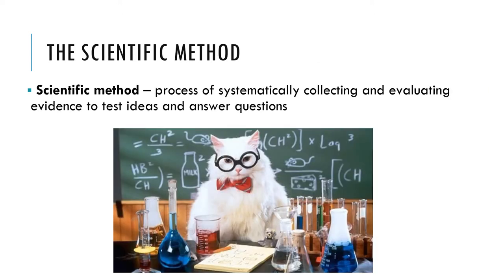The scientific method. The scientific method is a process of systematically collecting and evaluating evidence to test ideas and answer questions. While scientists may use intuition, authority, rationalism, and empiricism to generate new ideas, they don't stop there. Scientists go a step further by using systematic empiricism to make careful observations under various controlled conditions in order to test their ideas, and they use rationalism to arrive at valid conclusions.